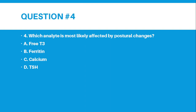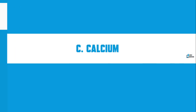Number 4. Which analyte is most likely affected by postural changes? A. Free T3, B. Ferritin, C. Calcium, or D. TSH. The correct answer for number 4 is letter C — Calcium.